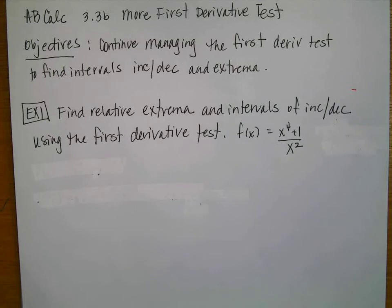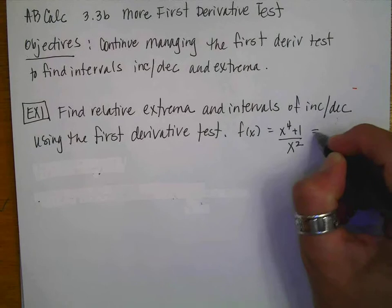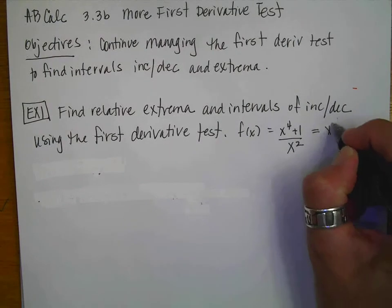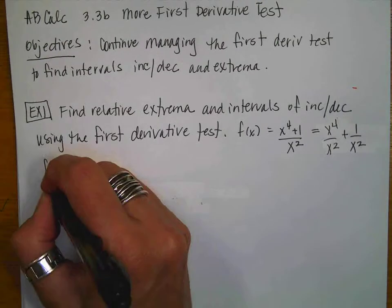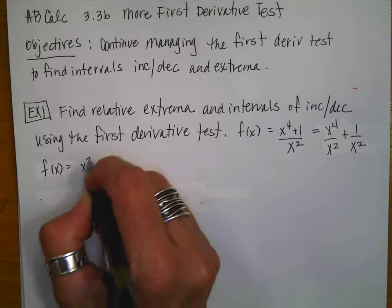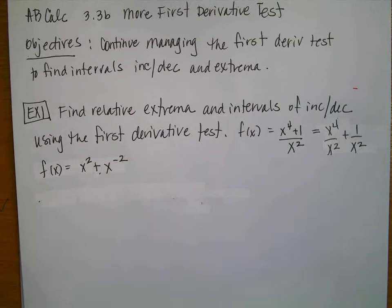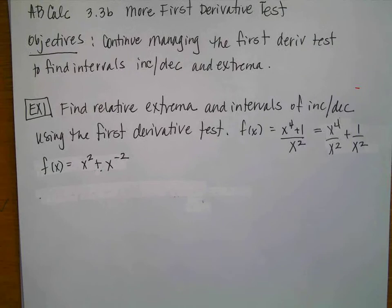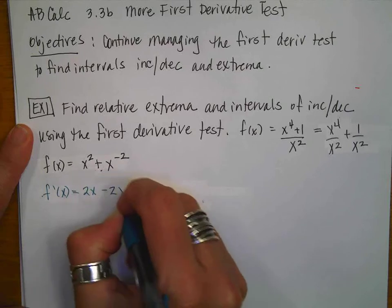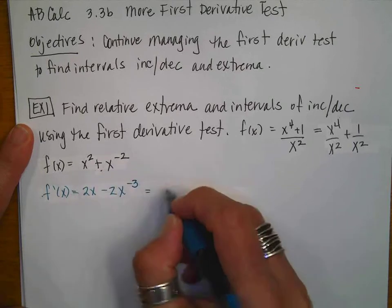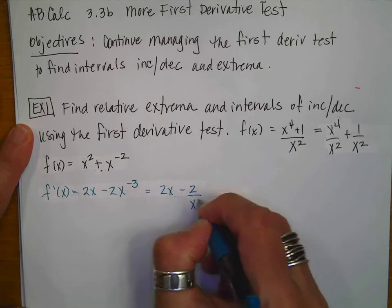For our first example, we need to find the relative extrema and intervals of increasing and decreasing using the first derivative test. I'm going to rewrite the function as x to the fourth over x squared plus 1 over x squared, which simplifies to x squared plus x to the negative 2. That makes the derivative easier: f'(x) = 2x minus 2x to the negative 3, written as 2x minus 2 over x cubed.